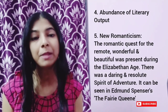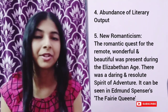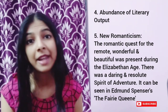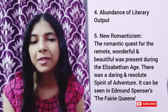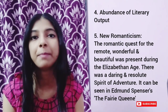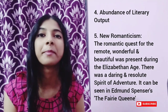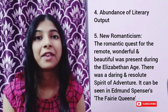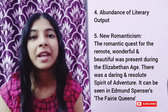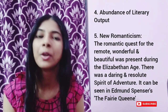Abundance of literary output: the stable political situation of England resulted in an abundance of literary output. Next is New Romanticism. The romantic quest for the remote, the beautiful, and the wonderful was seen during the Elizabethan Age. There was a strong, daring, and resolute spirit of adventure. It can be seen in Edmund Spenser's work, The Fairy Queen.